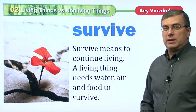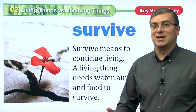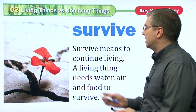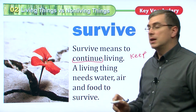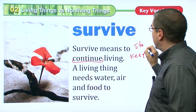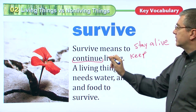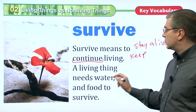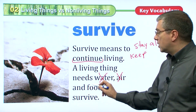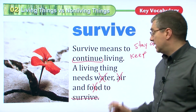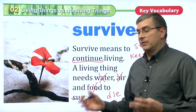We talk about the relationship between living things and the environment. 'Survive' means to continue living. One of the main goals of living things is to continue to survive — to keep living, to stay alive. A living thing needs water, air, and food to survive. If they don't have water, no air, no food, they cannot survive.